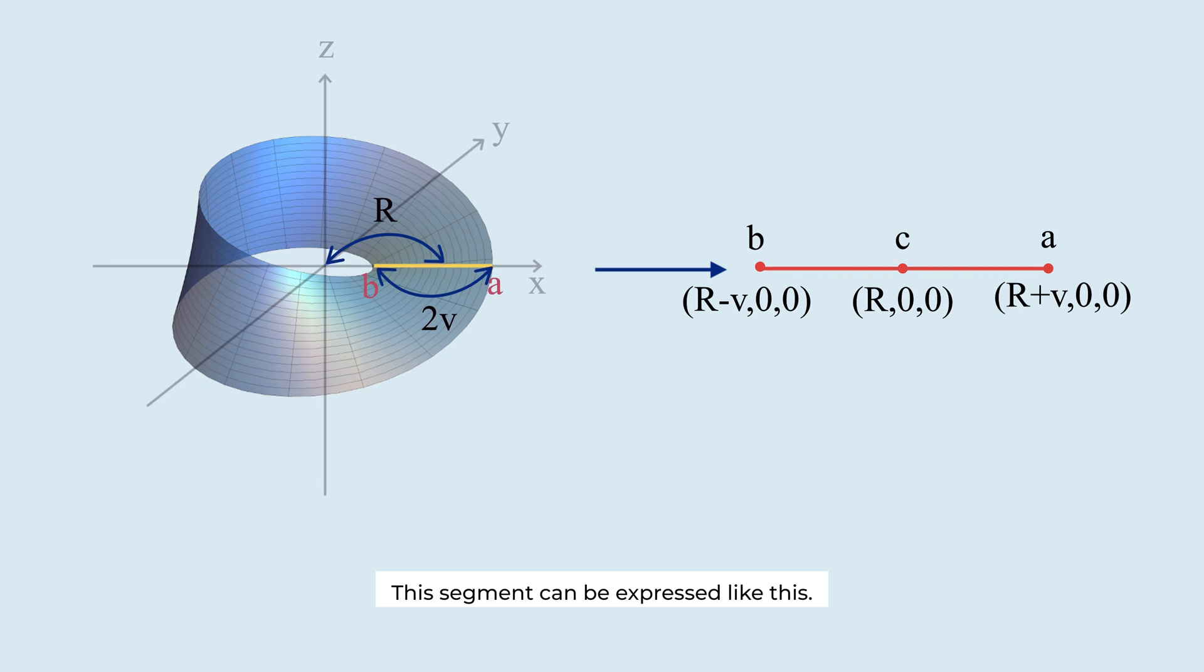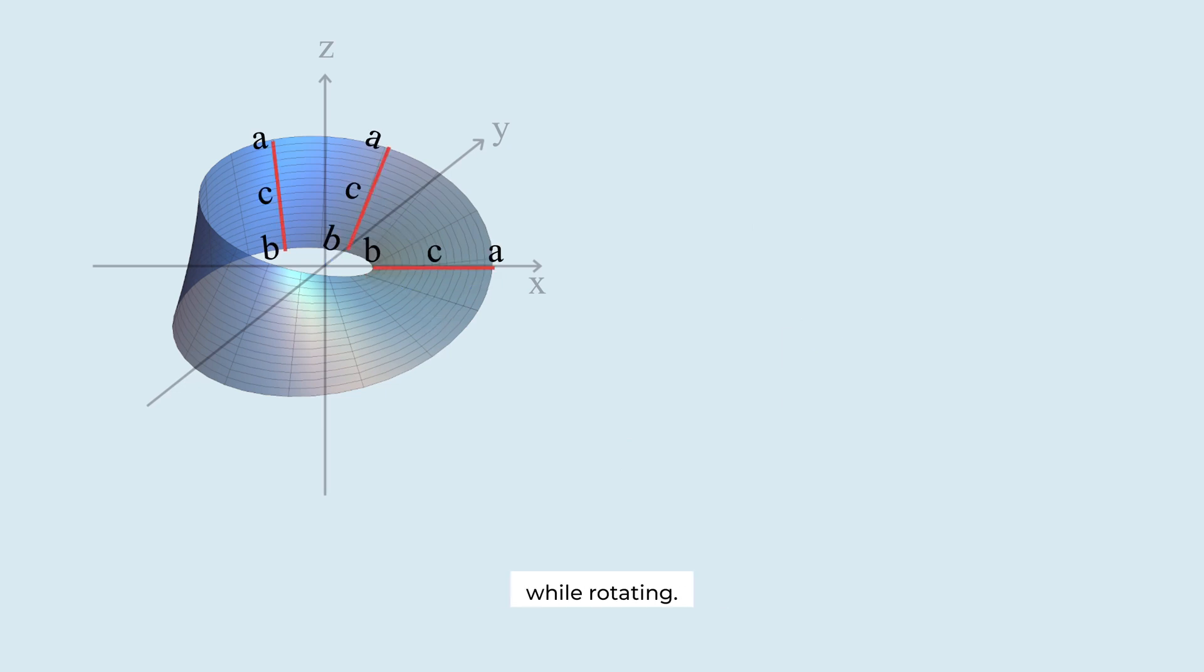This segment can be expressed like this. This part describes the x-coordinates of the points of the segment. Now, this line moves while rotating. As a result, the x, y, and z values change. Thus, we can express the transformation of the line through changes in coordinate values.